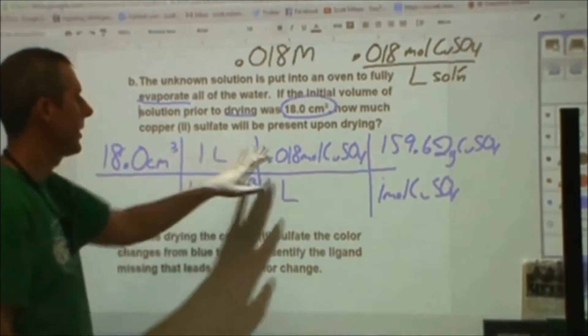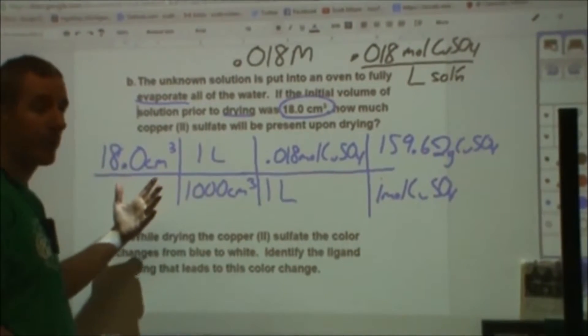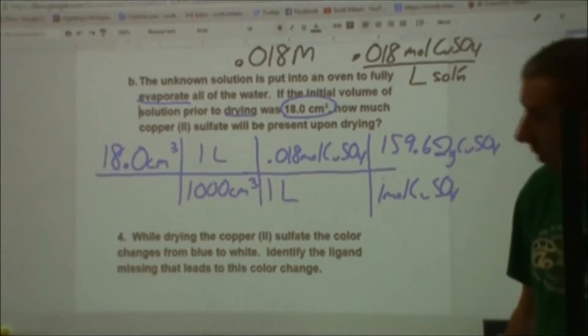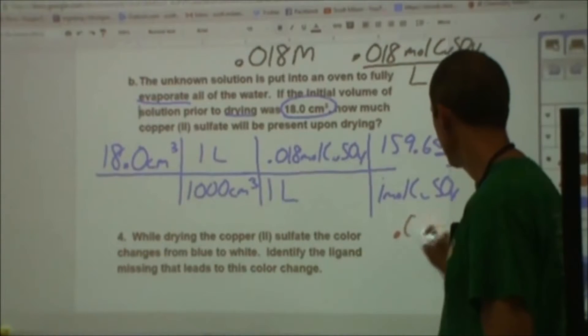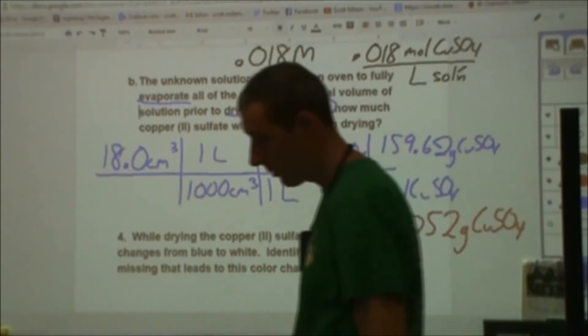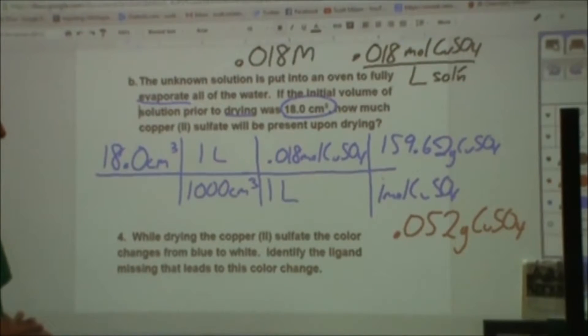Molar mass is 159.62 grams of copper sulfate. If I multiply this times this times this divided by a thousand, I'll get how many grams of copper sulfate that is. Copper(II) sulfate. And it turns out to be 0.052 grams. Which is not a lot, but we didn't start with a lot. We started with a tiny amount of volume, 18 milliliters, not a ton.